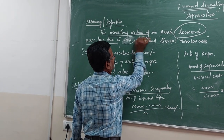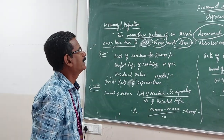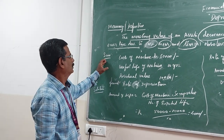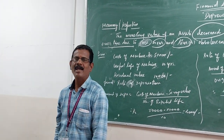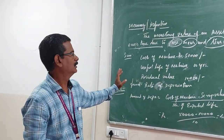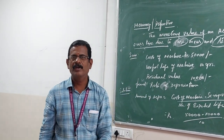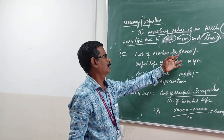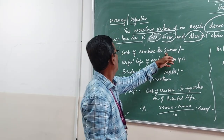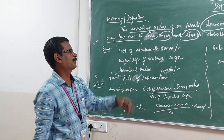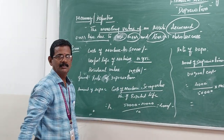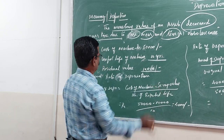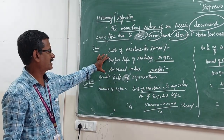Depreciation is observed over time. We will explain depreciation through the following sum. At the end of the sum, we have to find out the rate of depreciation and the amount of depreciation. The cost of the machine is 50,000 and the useful life of the machine is 10 years.